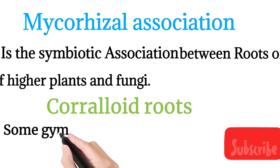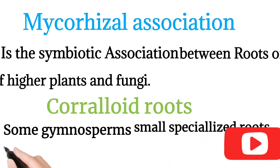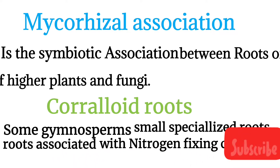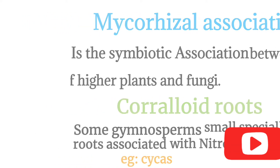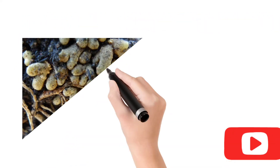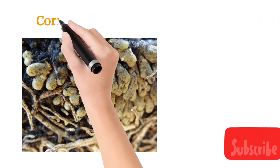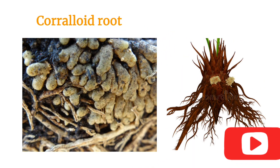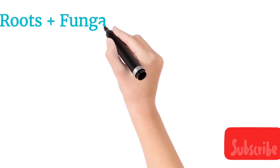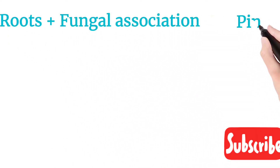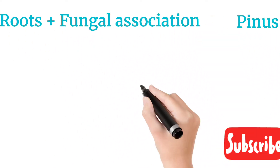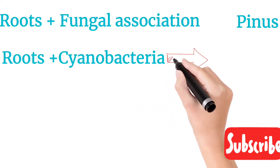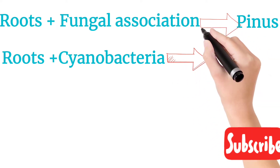What are coralloid roots? Some gymnosperms have small specialized roots associated with nitrogen-fixing bacteria — for example, Cycas has coralloid roots associated with nitrogen-fixing bacteria. Here are the coralloid roots; you can see in this picture that the roots become coral-shaped. Fungal association is seen in Pinus, and roots plus cyanobacteria association is seen in Cycas.